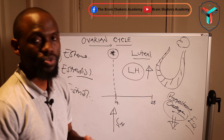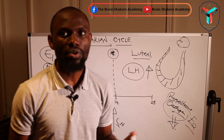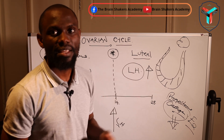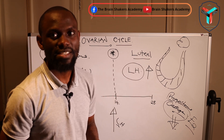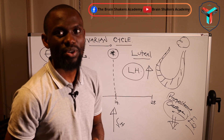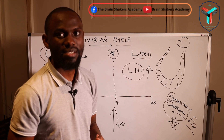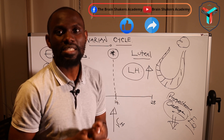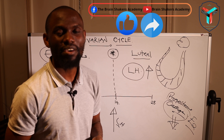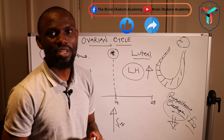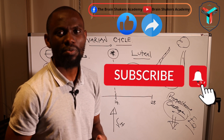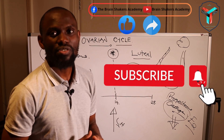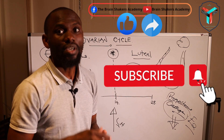That is what happens during the ovarian cycle — the follicular phase and the luteal phase, and all the hormones involved. If you found this video interesting and helpful in understanding the menstrual cycle, please give it a thumbs up, drop your comments below, and subscribe to the Brain Shakers Academy YouTube channel. Thank you so much for watching, and I will see you in the next one.